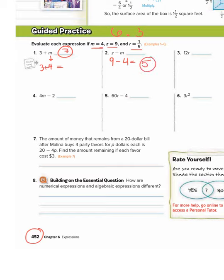Number 3, we have 12r. Remember, a number next to a variable, that just means multiplication. So this means 12 times r. Remember, we used the dot. And r is 1/6. So we have 12 times 1/6.